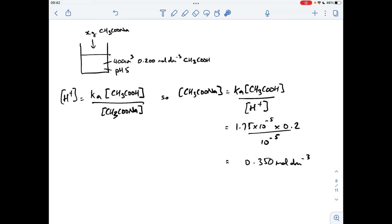So now we need to work out how many moles of sodium methanoate is needed. So moles of CH3COONa is concentration times volume, so it needs to be 0.35 concentration. The volume is 400 cm cubed, so that's 0.4 of a decimeter cubed, so that's 0.14 moles of sodium methanoate.